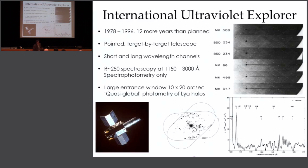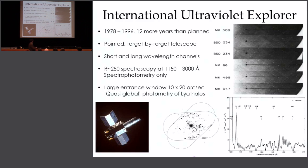This is the next machine that took over, the International Ultraviolet Explorer. It flew for almost 20 years — 12 more years than the mission was planned for. A great point about UV satellites is that they don't need cryogens or cooling, and if the detectors don't get badly radiation damaged, they fly until something breaks or until you run out of money. It had pointed observations target by target, but with a huge entrance aperture of about 10 by 20 arc seconds, and it returned broad spectrophotometry with resolving powers of about 200.